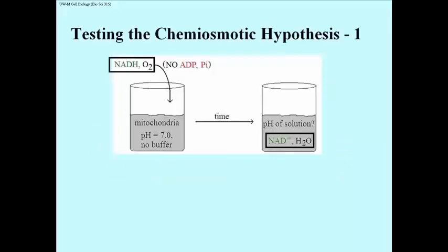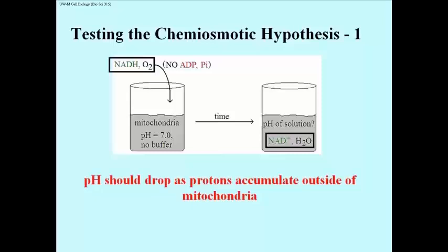Here's the test. If respiratory substrates are added to the mitochondria, specifically NADH and oxygen, the pH of the solution outside the mitochondria should drop as the solution accumulates protons pumped out of the matrix. That solution becomes acidic. Note that for this experiment to work, the solution had to be unbuffered.